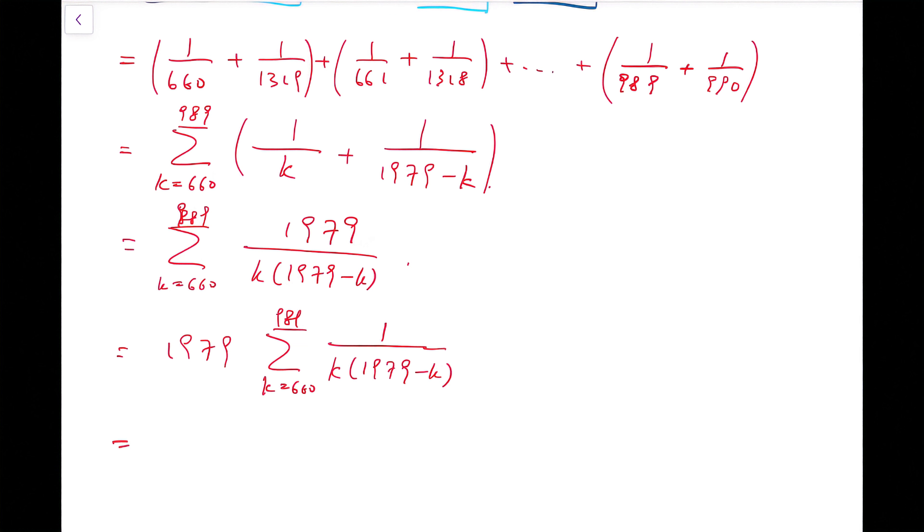Now, if I really do the addition, notice that this number 1979, this magic number, is actually a prime. It's a prime number.